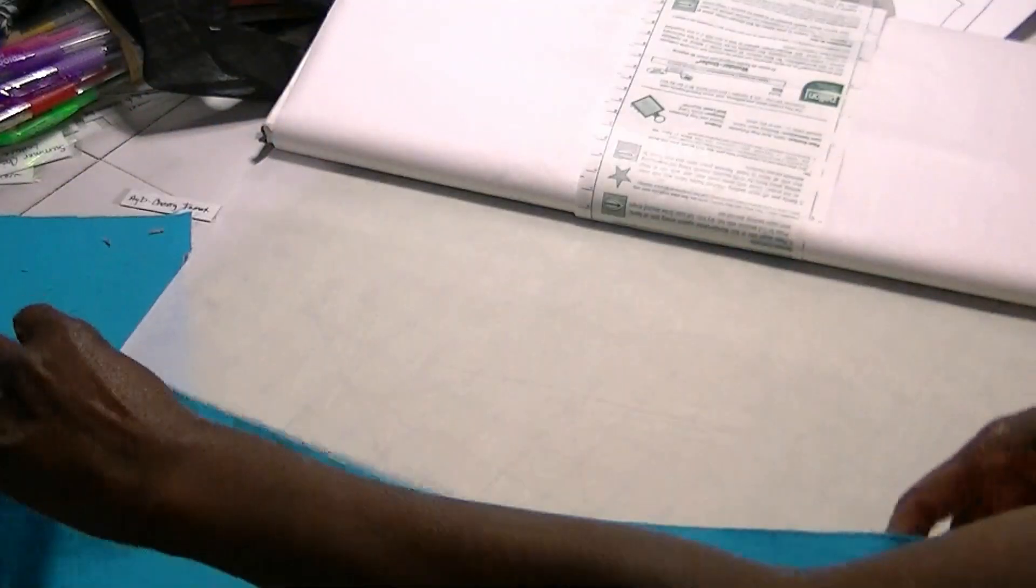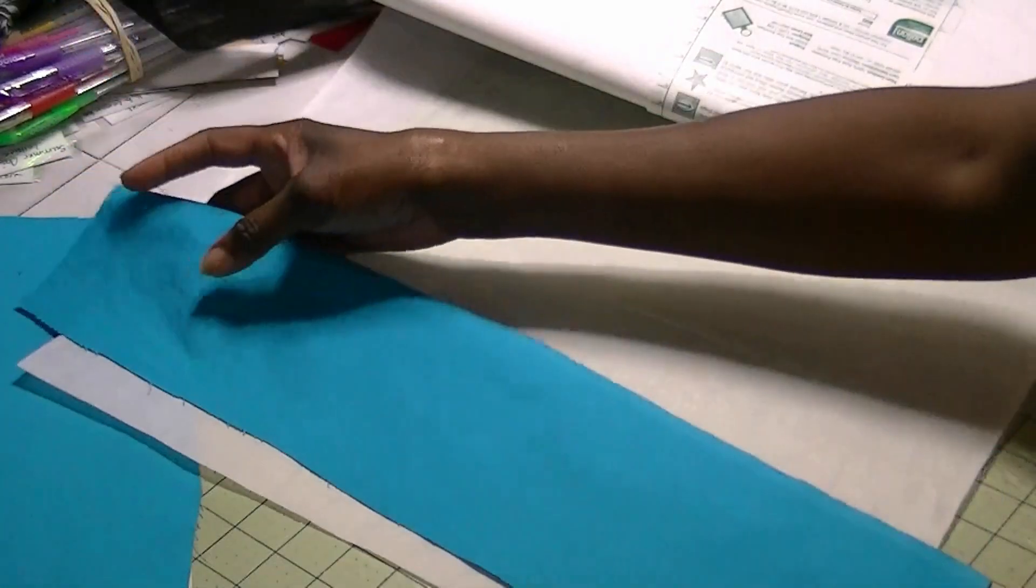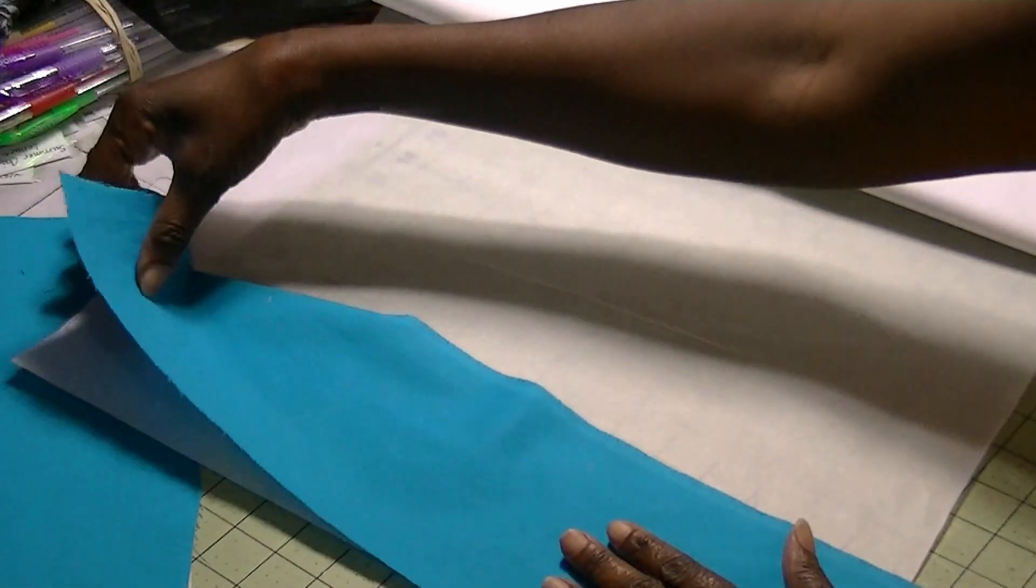So to get started, I'm going to take a piece of the Pell-On and I'm just going to take my cotton fabric and lay it on top of the Pell-On and just cut it out.